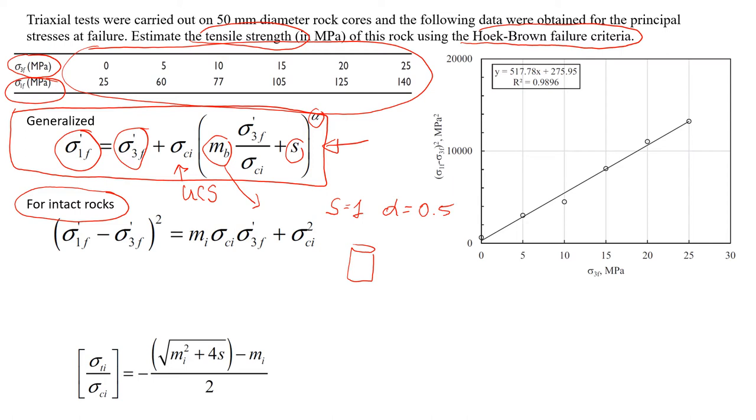And instead of Mb, we're going to call it Mi. So this will be the formula for this particular case. And this is what we're going to use to estimate the data from this triaxial test because we tested intact rocks without joints and discontinuities.